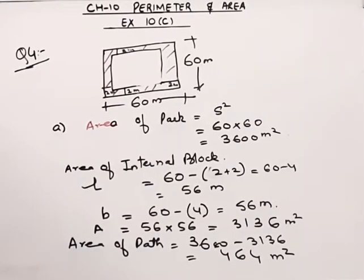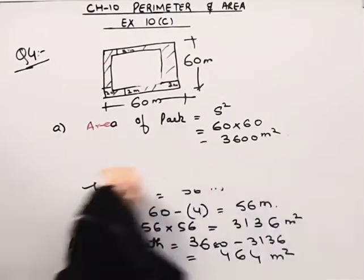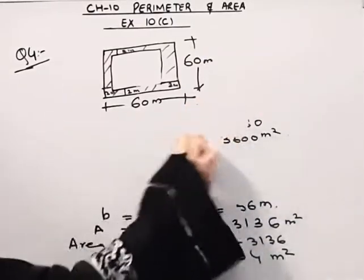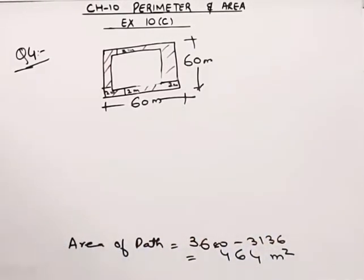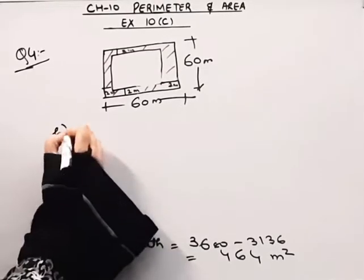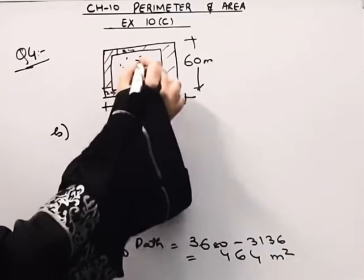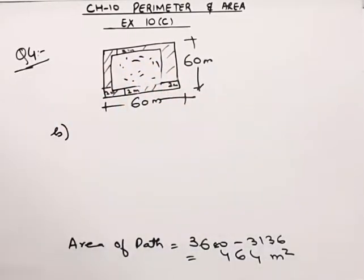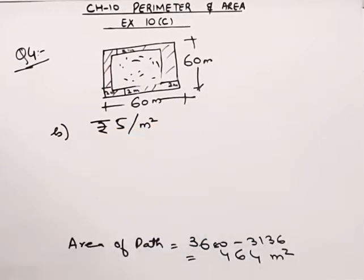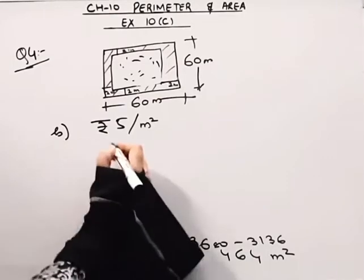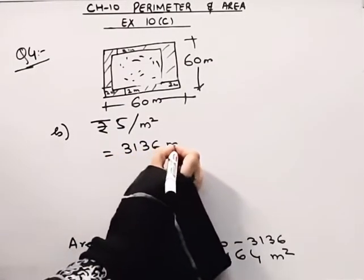Now we will come to the next part. The B part of the question is: the cost of cultivating flowers in the remaining portion of the garden. Where do we plant the flowers? At the remaining portion, at the rate of rupees 5 per meter square. The area of that portion is 3136 meter square.